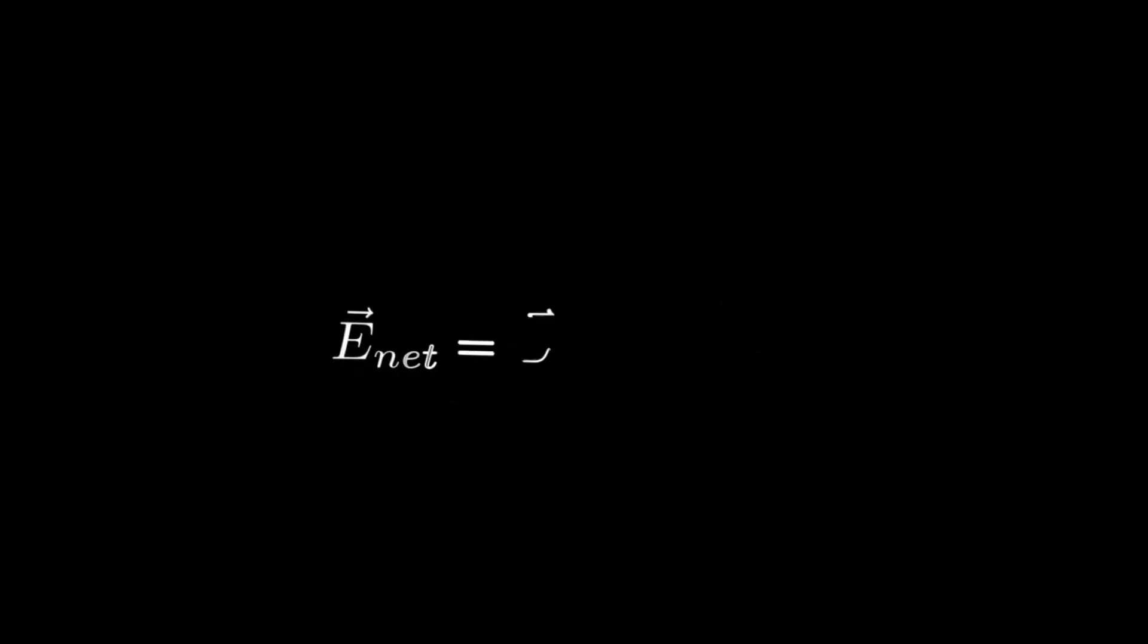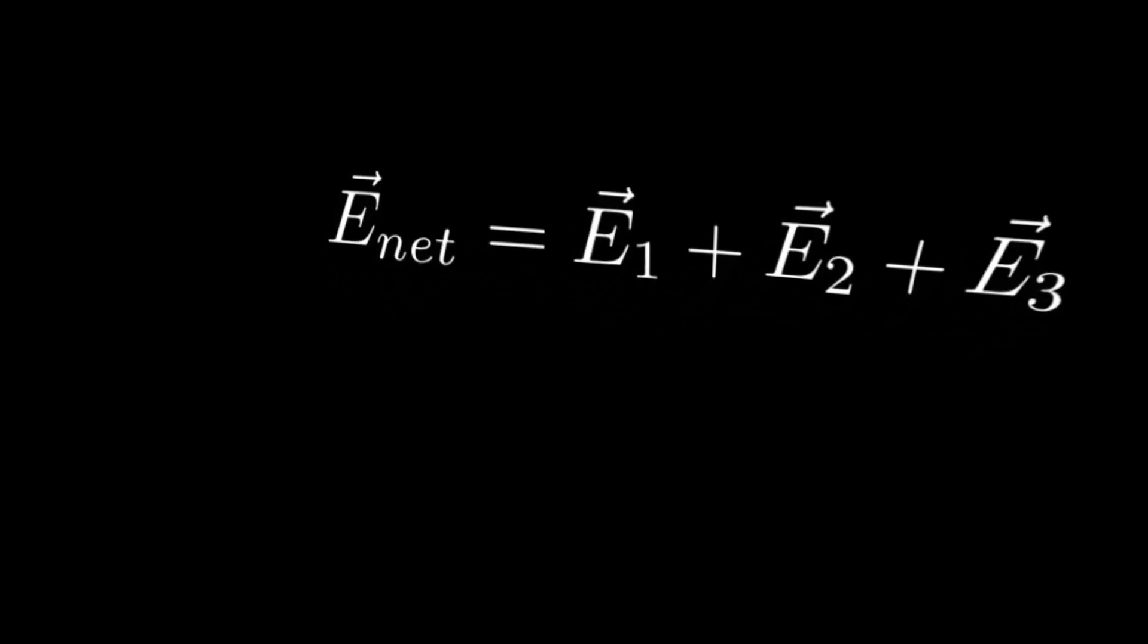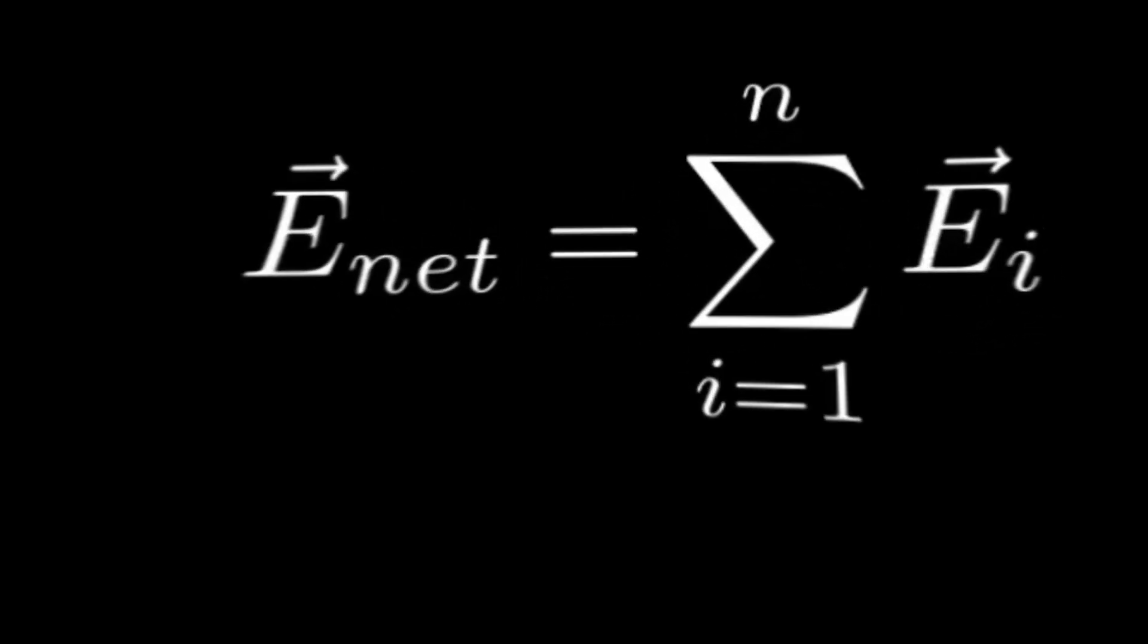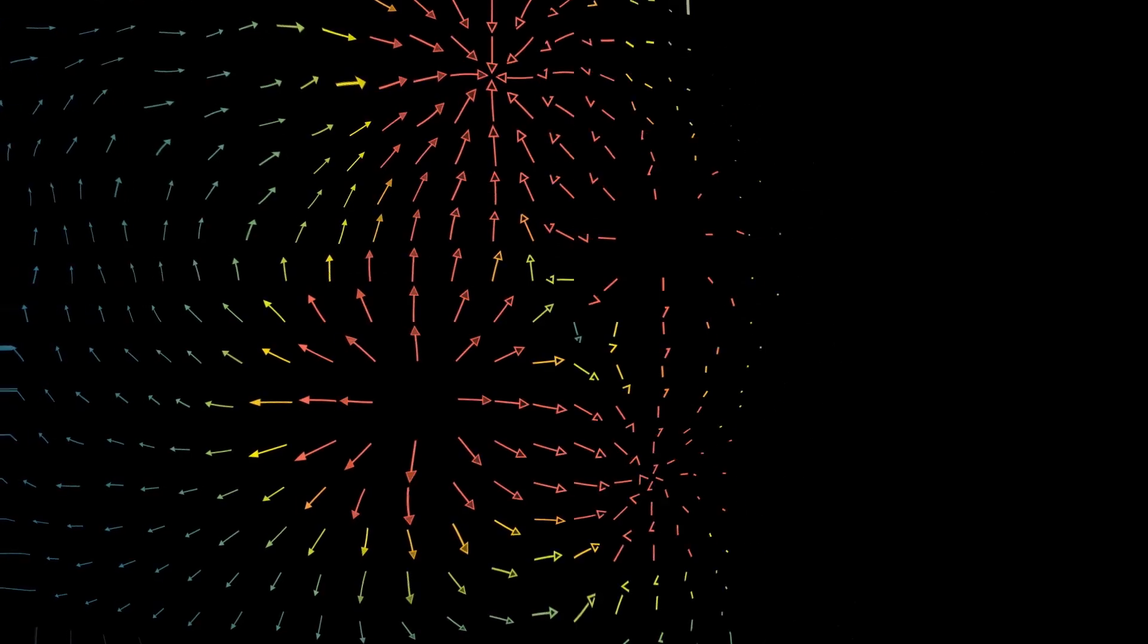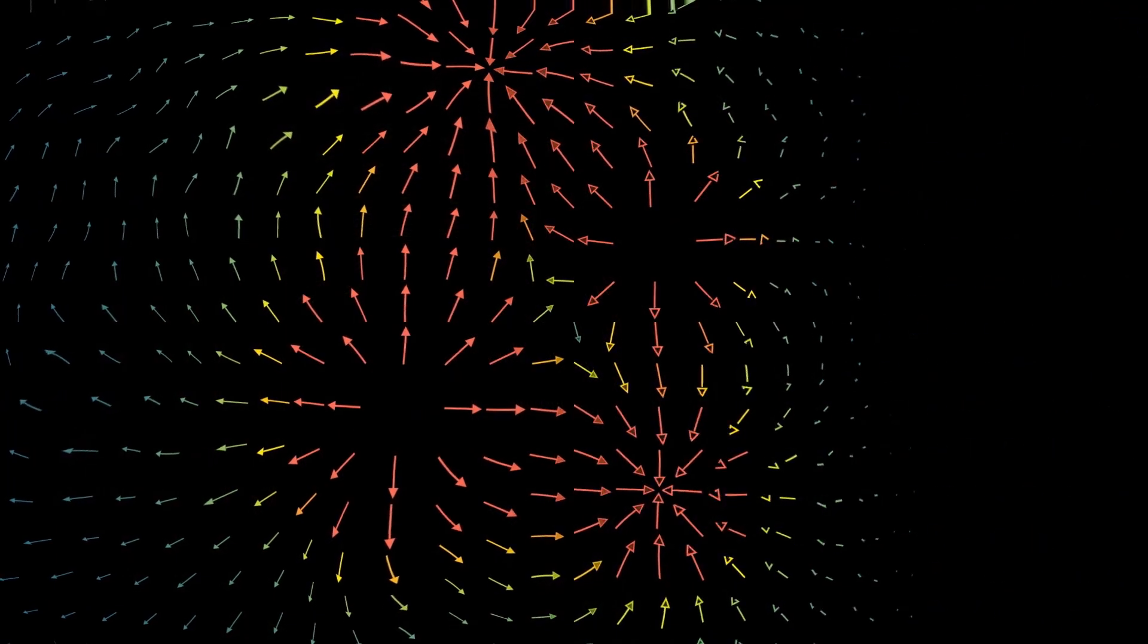What we'll also note in electric fields is a concept of superposition. Superposition essentially tells us that different electric fields combine additively. This shouldn't surprise you if you're familiar with vectors and forces, since forces also follow superposition. With superposition, we can combine the electric fields of multiple particles into one net electric field.